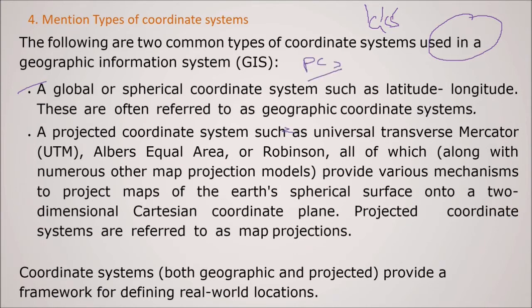So this PCS, like your UTM, Universal Transverse Mercator, Albers, equal area or Robinson, all of which along with the numerous other map projection models, they provide various mechanism to project maps of the earth's spherical surface onto a Cartesian coordinate plane. So projected coordinate systems are referred to as the map projections and coordinate system provide a framework for defining the real world location, both geographic and projected.